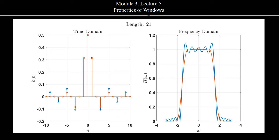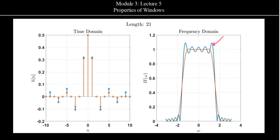Hello everyone, welcome to another lecture of the course Digital Signal Processing. In the previous lecture, we have seen how to design an FIR filter using windowing technique. We have said that due to sudden truncation of the ideal low pass filter, we observe ripples in the frequency domain. If we observe this blue colored plot here, it is the frequency domain representation due to sudden truncation, or what we call as the rectangular window.